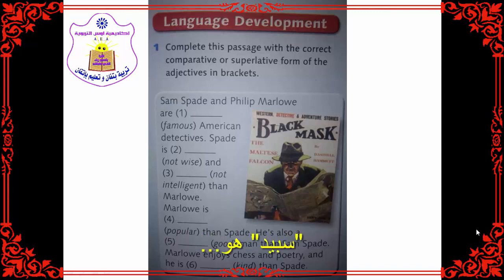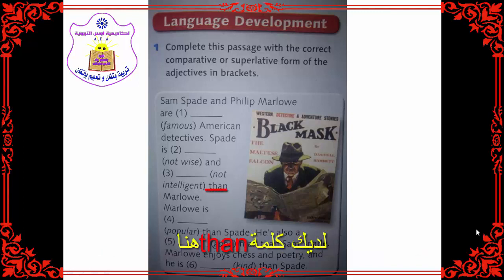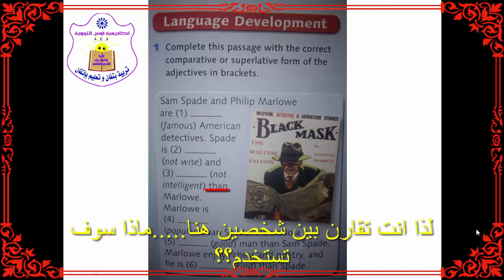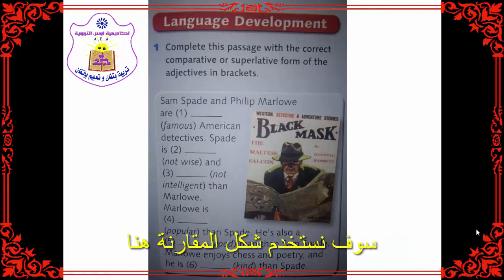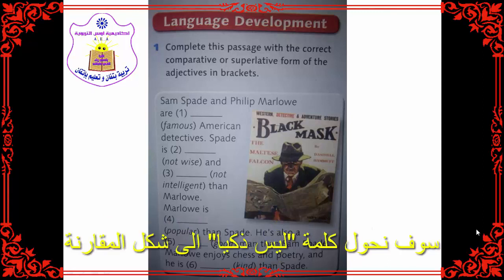The next sentence: Spade is not wise and not intelligent than Marlowe. You have 'than' here, so you are comparing between two persons. You will use the comparative here. Put 'not wise' into the comparative form and 'not intelligent' into the comparative form.